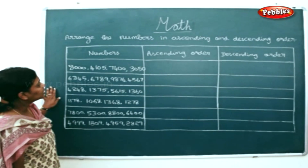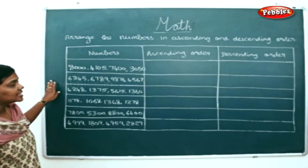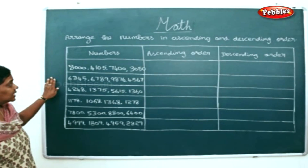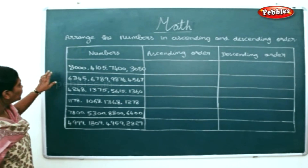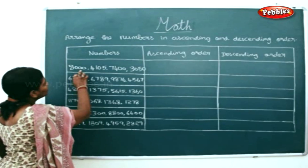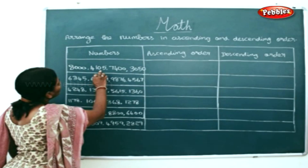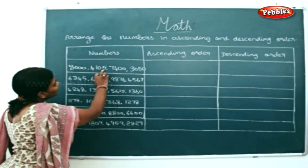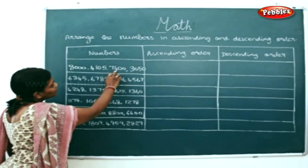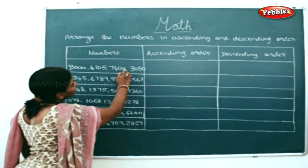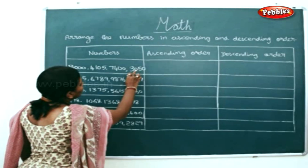Now, we will arrange the given numbers in ascending and descending order. The numbers here are 8000, 4000, 105, 7400, 3000 and 50.